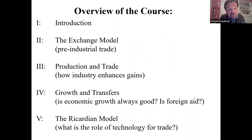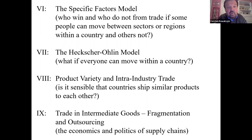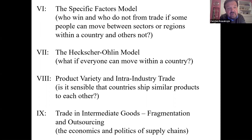In Roman numeral V, we look at the role of technology for international trade, and in particular whether countries that are sophisticated technologically might have anything to gain from trading with countries that are not. We will then move to frameworks where, within a country, factors of production — labor and capital — move between sectors or regions. For example, who would win and who might not from trade if some people can move between sectors or regions in a country and others cannot.